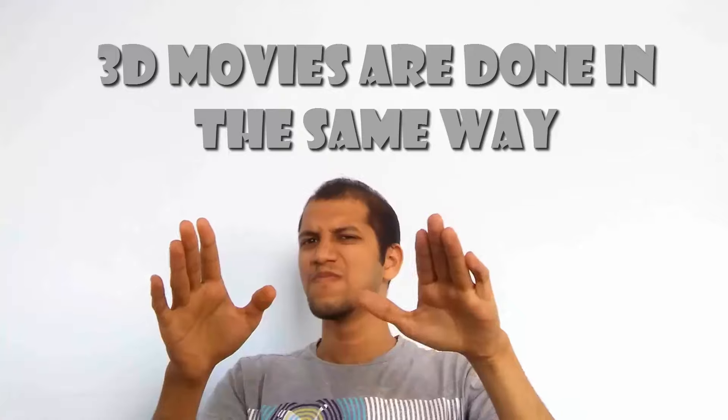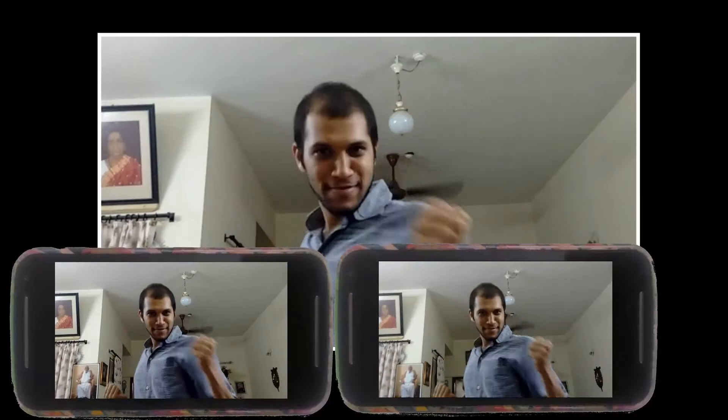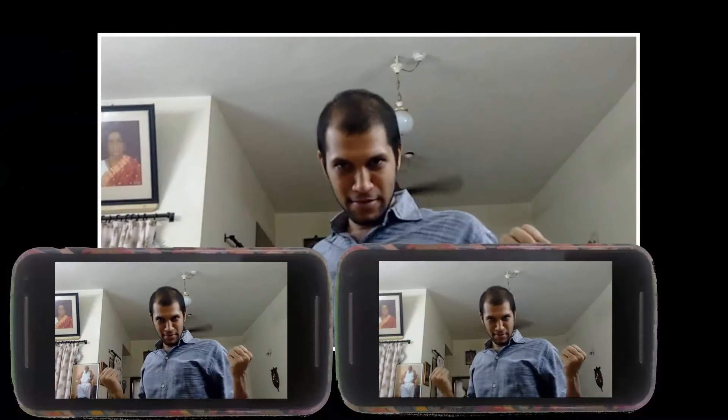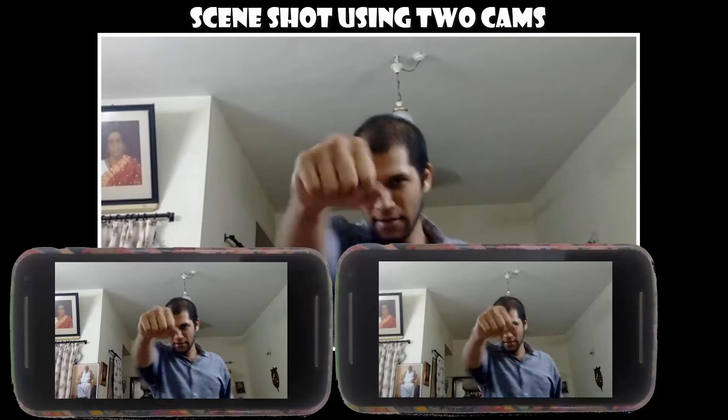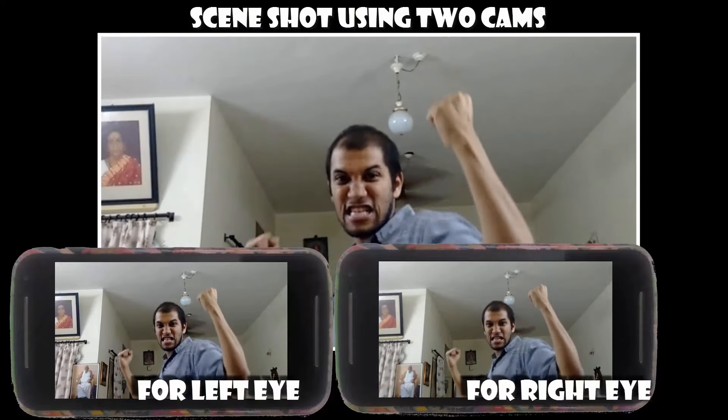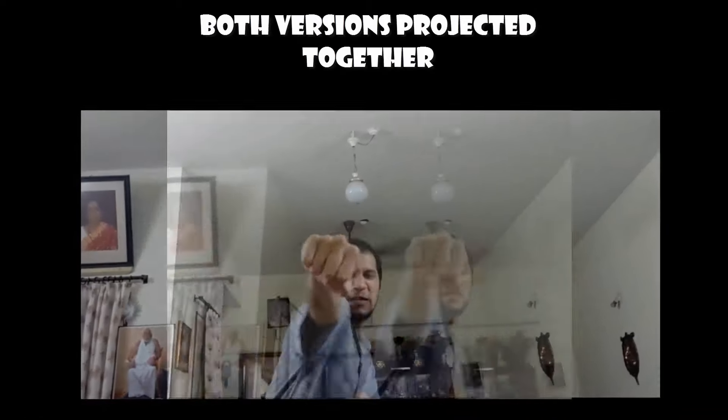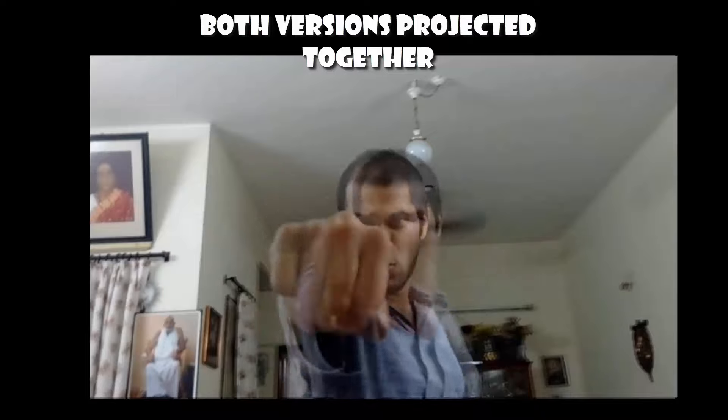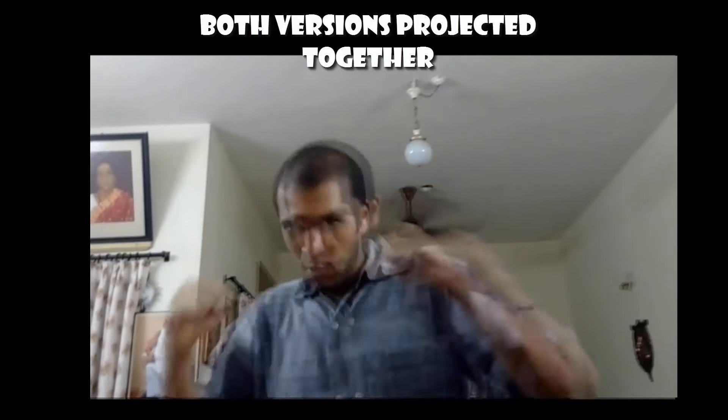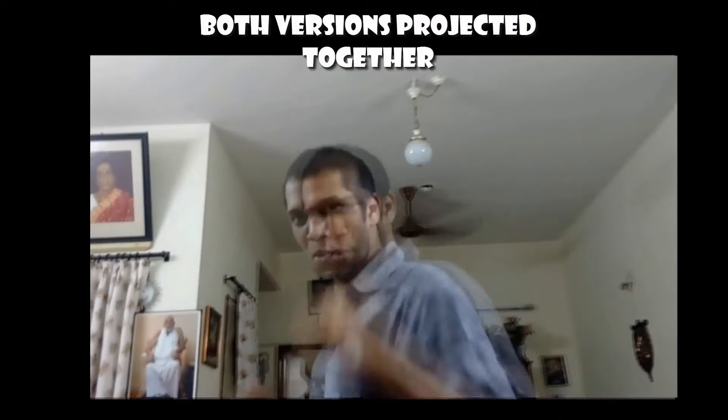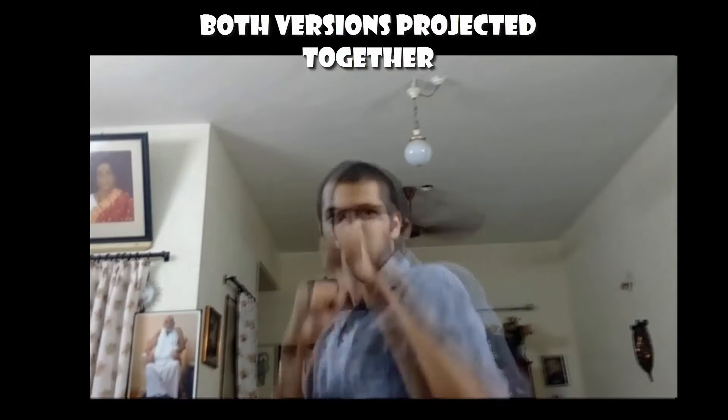So 3D movies are done exactly the same way. There are two separate movies shot using two cameras, side by side, one for each eye. Then they are appropriately polarized and two projectors simultaneously project the two movies. When you take off your glasses, you can actually see both these movies with both the eyes and you can see some shift and it looks blurred.